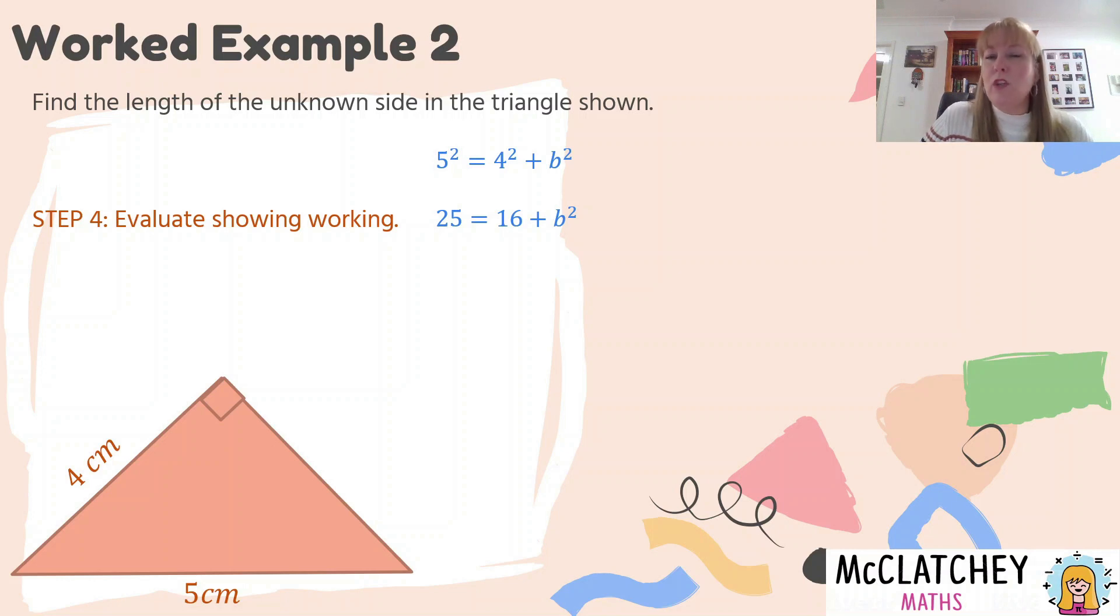And now you can see we're trying to find b all by itself. But at the moment, 16 is added to b². So what we're going to do is we're going to subtract 16 from both sides of the equation. And we get 25 take away 16 on the left hand side is nine. And 16 take away 16 on the right hand side gives me zero. So I've moved that 16 to the other side of the equation. So now I've got b² is equal to nine. And if I take the square root of b², so I'm taking the square root of both sides of my equation now, because the square root of b² is just b. And the square root of nine is three. And of course, I'm going to write centimeters on there because I've been given my units of measurement.